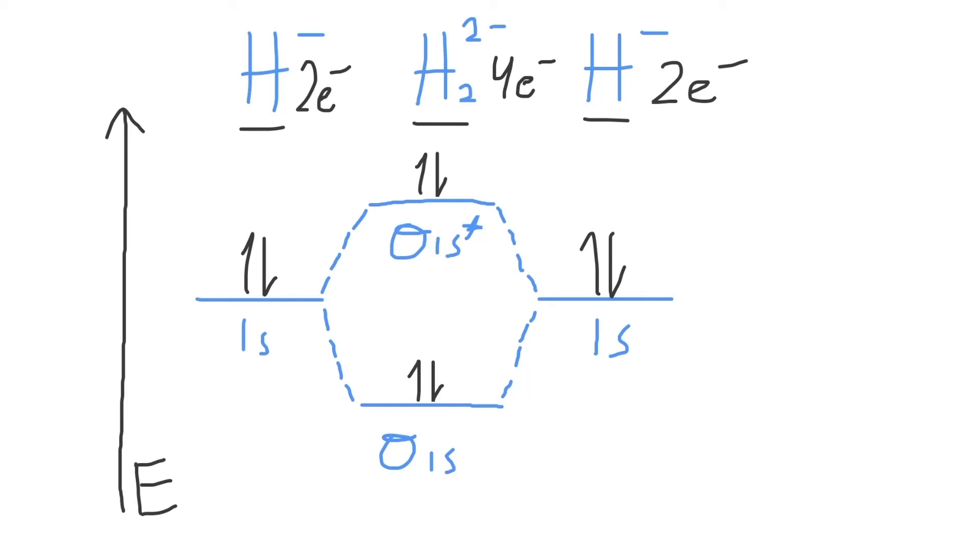Now, how can we figure out if this molecule exists? We can tell if it exists by calculating the bond order for H2 2-. The bond order is a measure of the stability of a bond, its strength, and tells you how many electron pairs are present in a potential bond between the molecule.